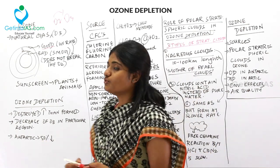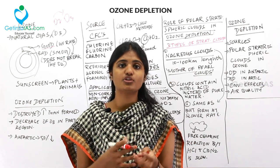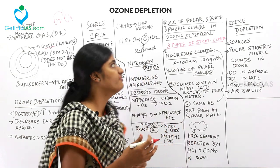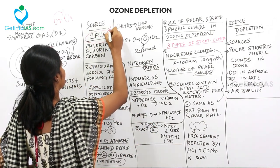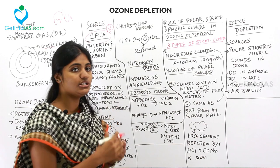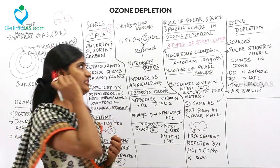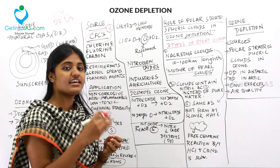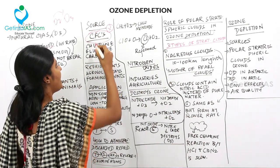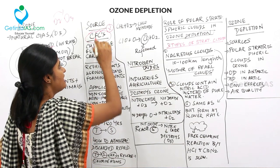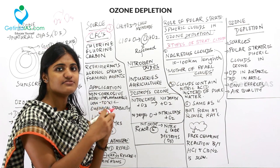Now moving into the sources or causes of ozone depletion. The first is CFC — a very important greenhouse gas. CFC can be broken down into chlorine, fluorine, and carbon. These are the atoms inside CFC.